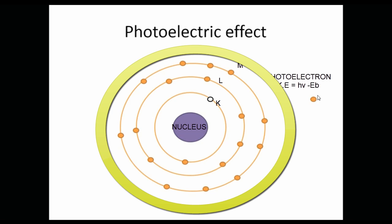Now, the emitted electron is called photoelectron and has a kinetic energy which is calculated by the photon energy minus the binding energy of this photoelectron. So, this is the photoelectric effect.